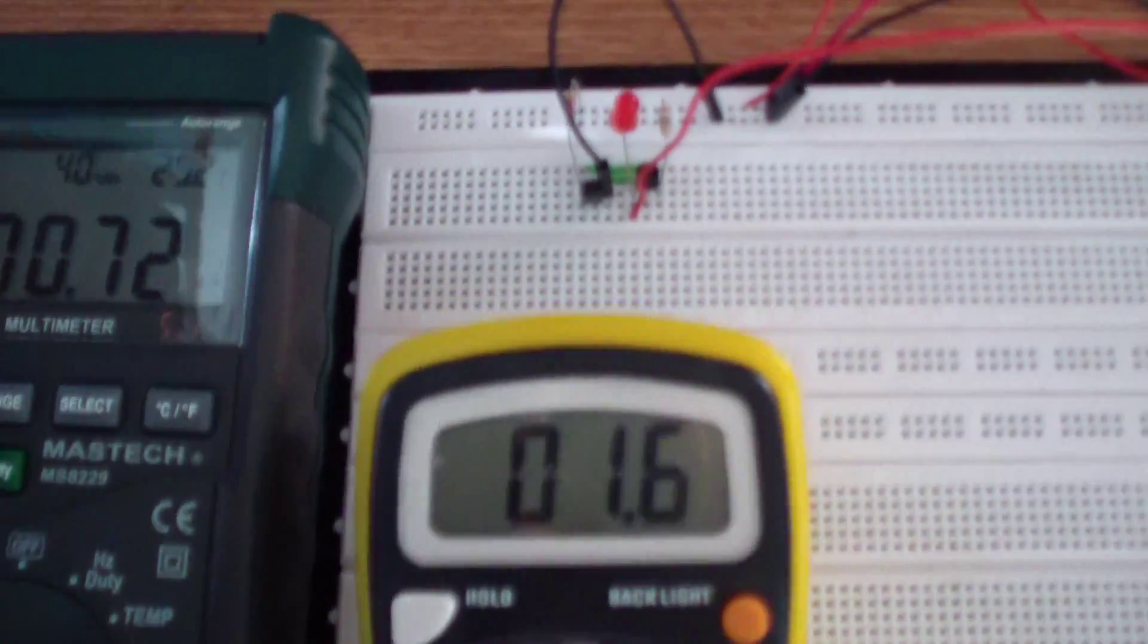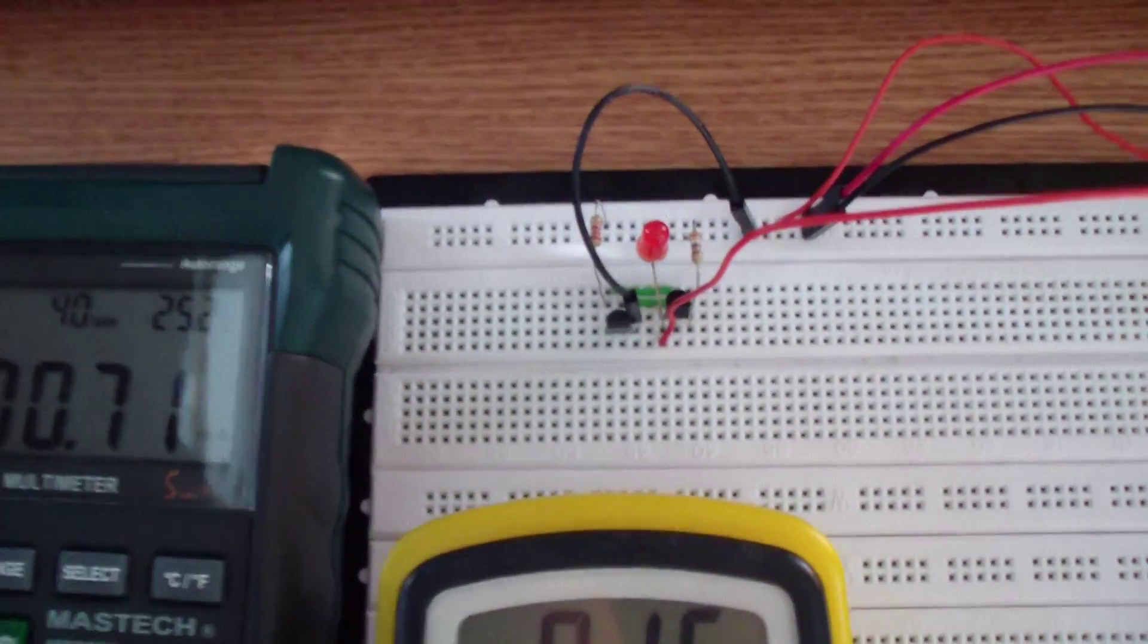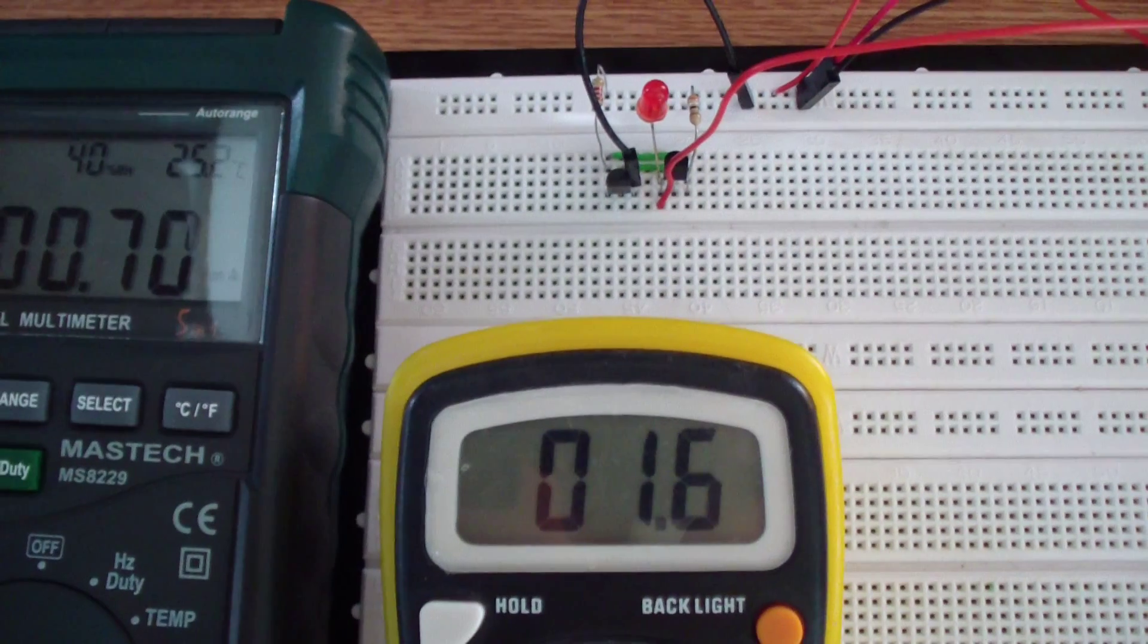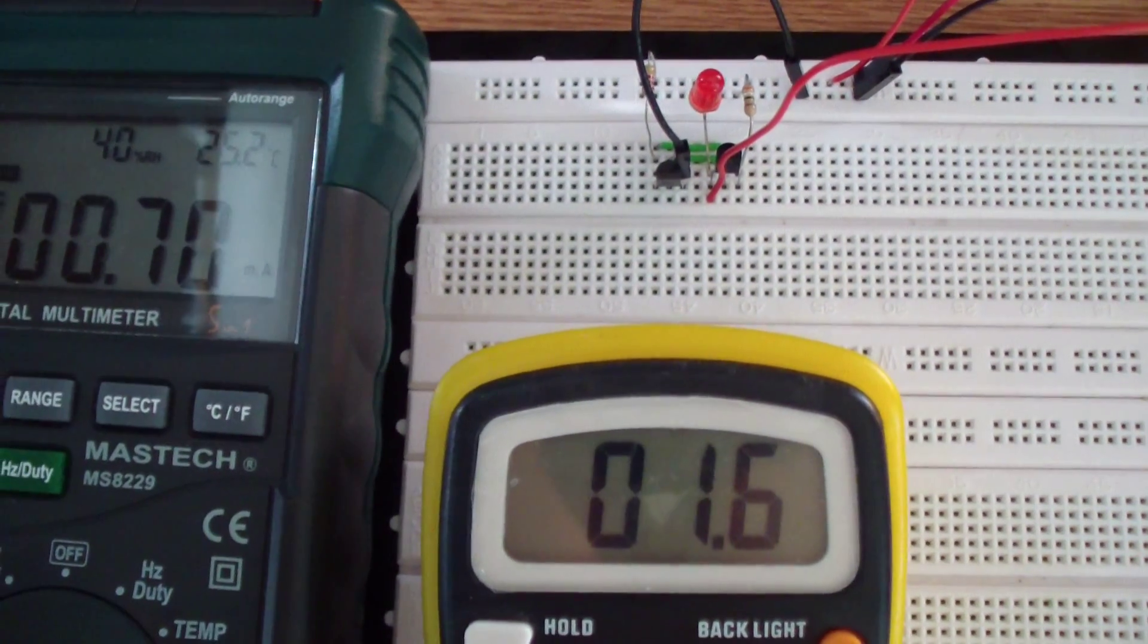Hello friends, here is a simple LED constant current circuit that allows you to power up the LED from a variable source between 2.0 and 24 volts.